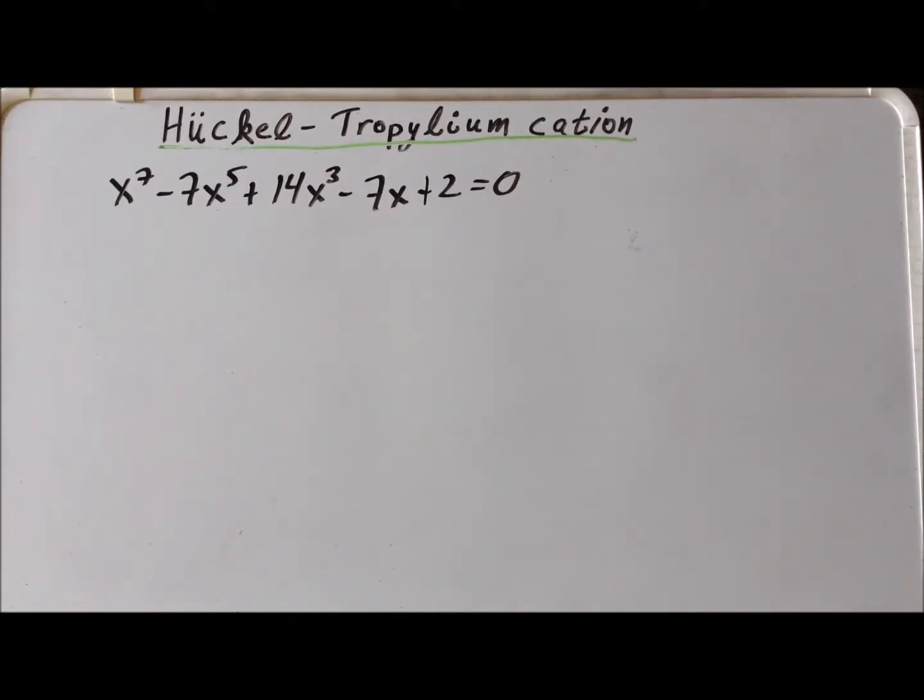At the end of part one, we had reduced the seven by seven secular determinant equation to a polynomial equation of seventh order that is equal to zero. Our goal here is to find the roots of this polynomial, then use back substitution to determine the energies of the molecular orbital levels for the pi orbitals of the tropylium cation.